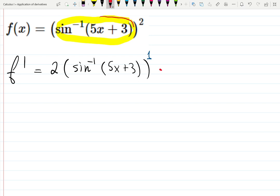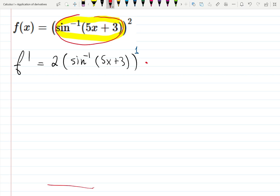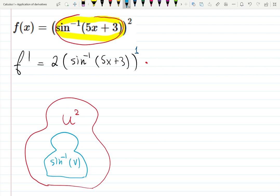What's the second function in the order? Again, if you imagine it as a Russian doll, this is how I like teaching it. The outside Russian doll is everything is squared, so it was u squared. We figured it out. 2u to the 1. Then the next Russian doll, the next Russian doll is arc sine, right? So sine minus 1 of, let's call it v, whatever. So now I'm differentiating arc sine. I know the derivative of arc sine is 1 over, so square root, 1 minus input squared, 5x plus 3 squared, input squared.